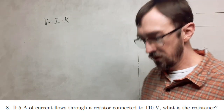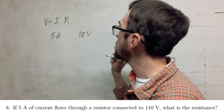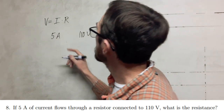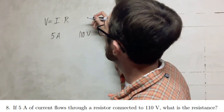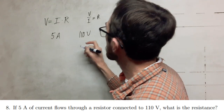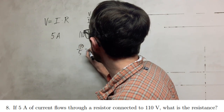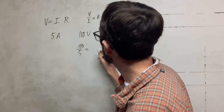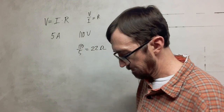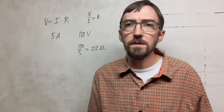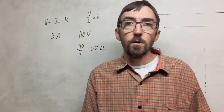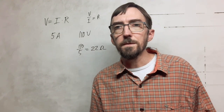For the last problem, 5 amps is flowing through a resistor with a 110 volt source, and we want to know the resistance. Using V divided by I equals R: 110 divided by 5 gives us 22 ohms. And that's the last of the circuits and fundamental electronics problems. Hopefully this has been useful — cheerful calculations!